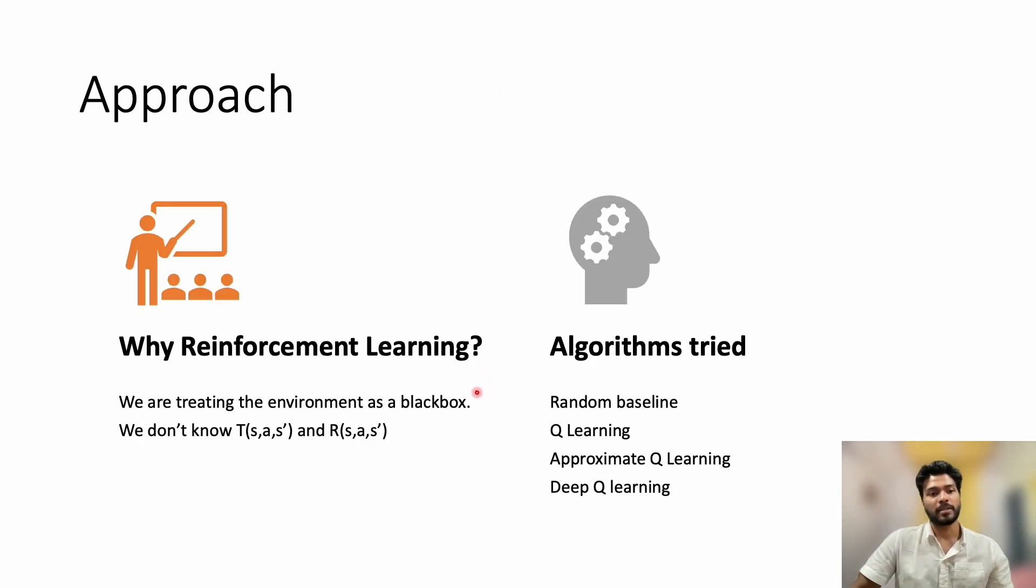Why reinforcement learning? We are treating the environment as a black box. We don't know the transition probabilities and the reward function. We will try these algorithms: random baseline, Q-learning, approximate Q-learning, and deep Q-learning.